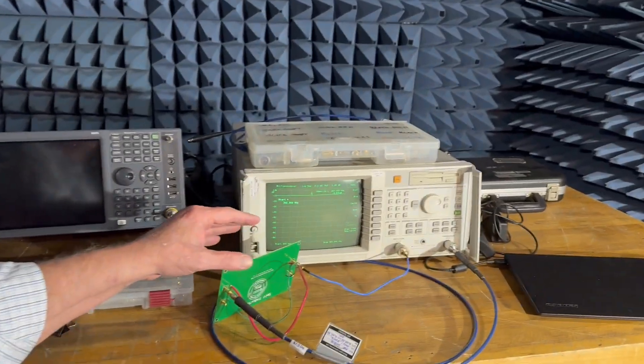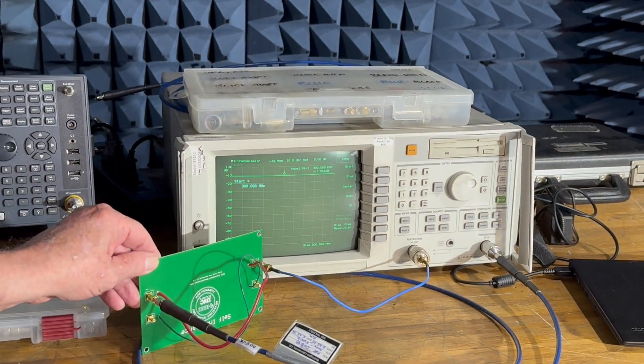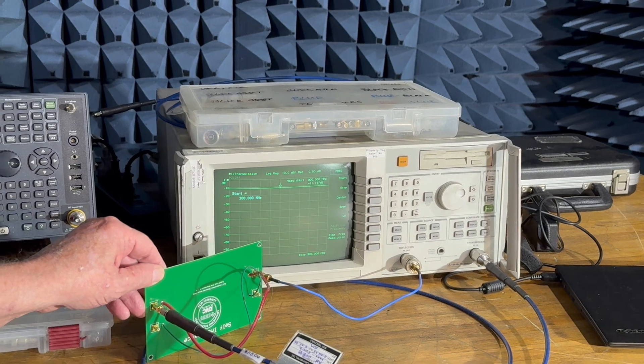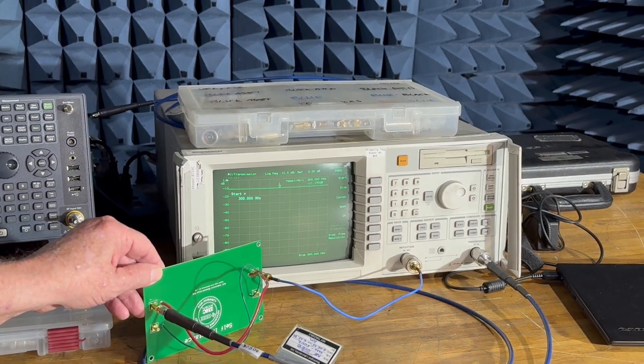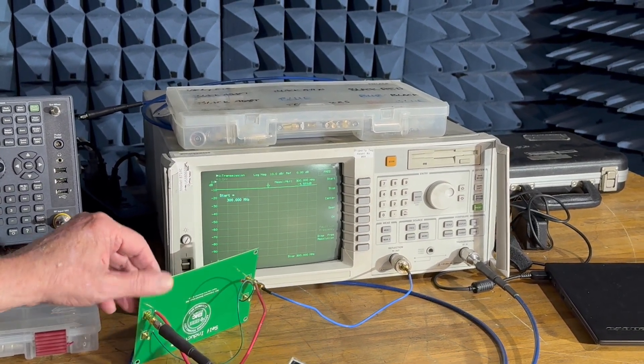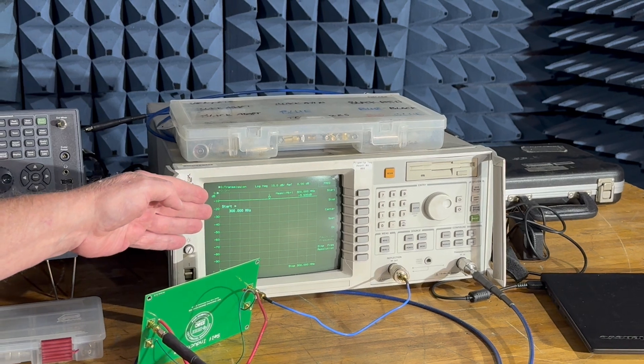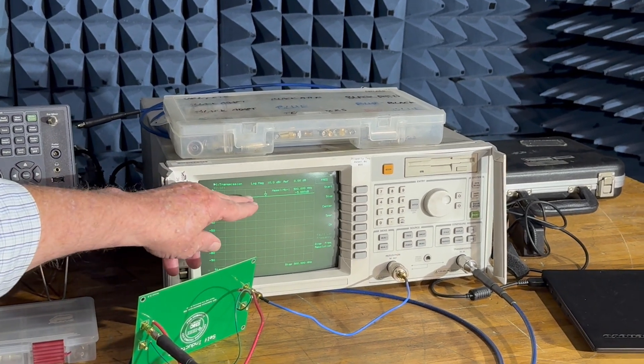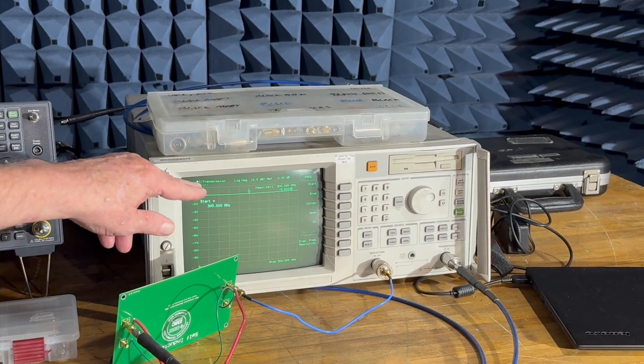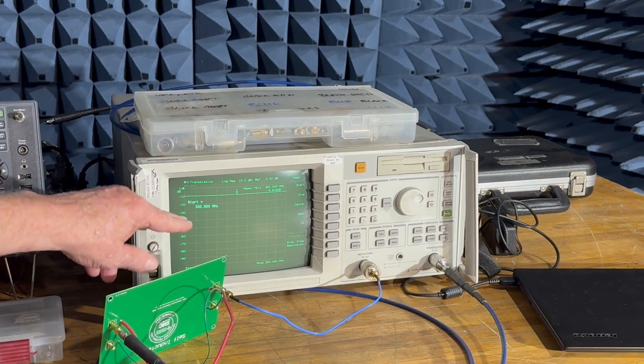So what I've got here is a circuit board that the EMC Society has developed just for this purpose to demonstrate. I've got a network analyzer here, and you can see a trace showing that there's some loss right now.